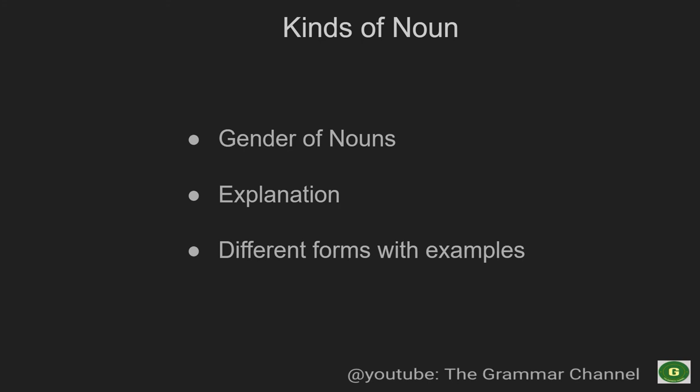And common gender, when we say common, we say baby. We don't specify male or female. Child, we don't say girl baby, girl child or boy. Cousin, servant, person, student, teacher, neighbor. These are all common gender.